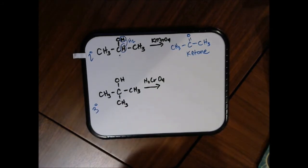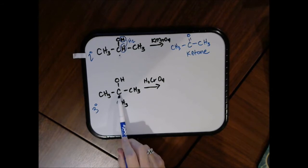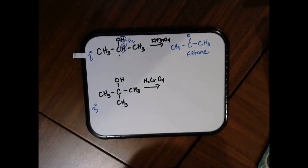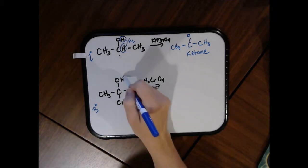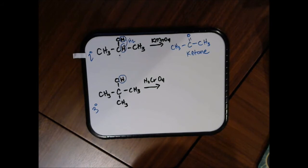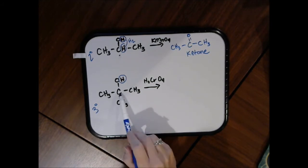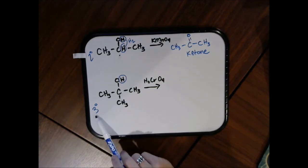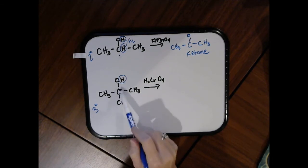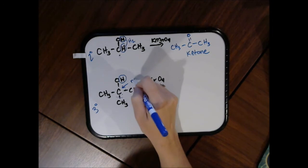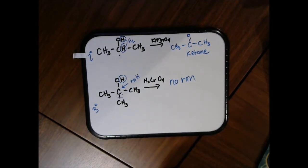For a tertiary alcohol, the hydroxide group is bonded to a carbon that is bonded to three other carbons. Using chromic acid as a mild oxidizing agent, we look for hydrogens to eliminate. There's the hydrogen on the hydroxide group, but in a tertiary alcohol there is no hydrogen on that attached carbon. It cannot eliminate H2, which means you're not going to get a reaction. Tertiary alcohols do not undergo oxidation reactions — only primary and secondary alcohols do.